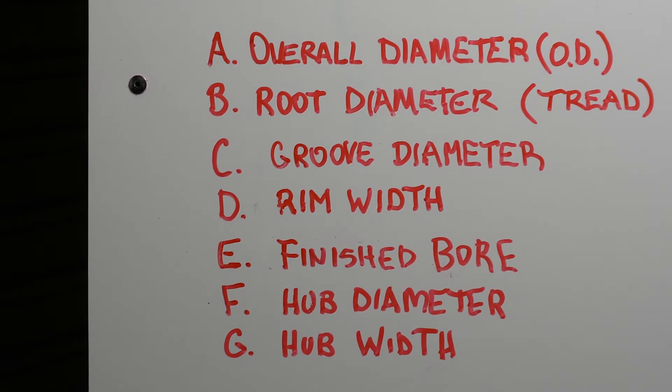This includes overall diameter, root diameter, groove diameter, rim width, finished bore, hub diameter, and hub width.